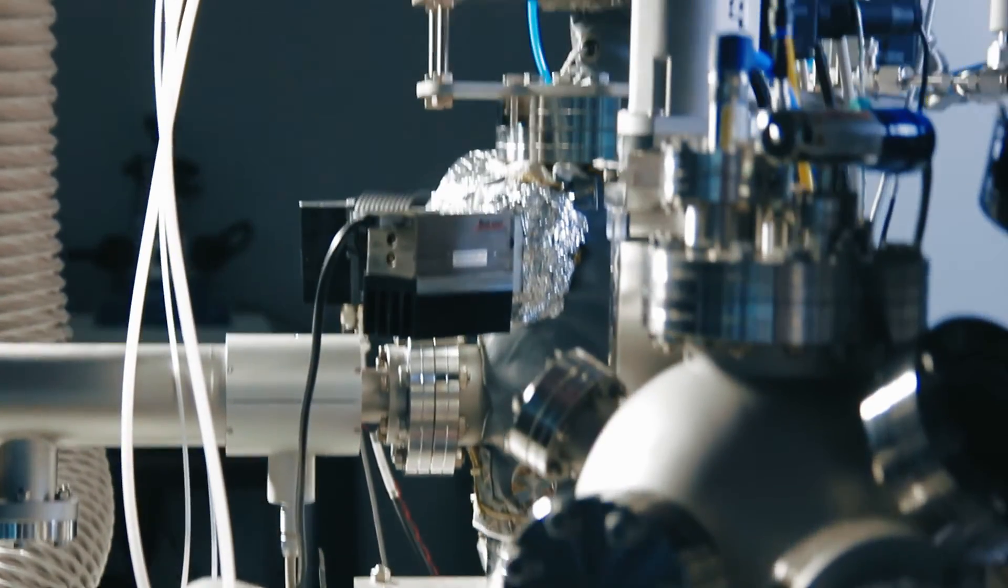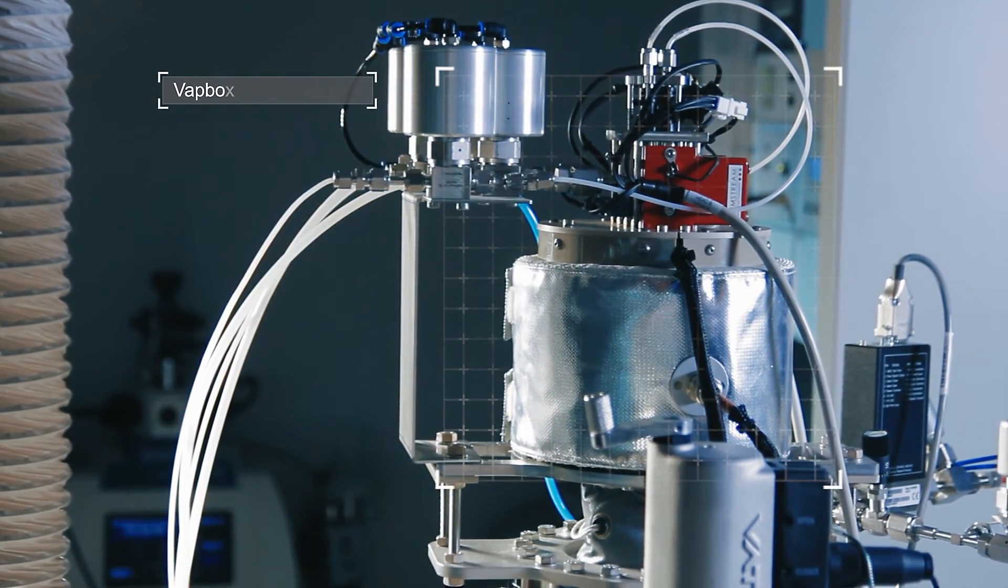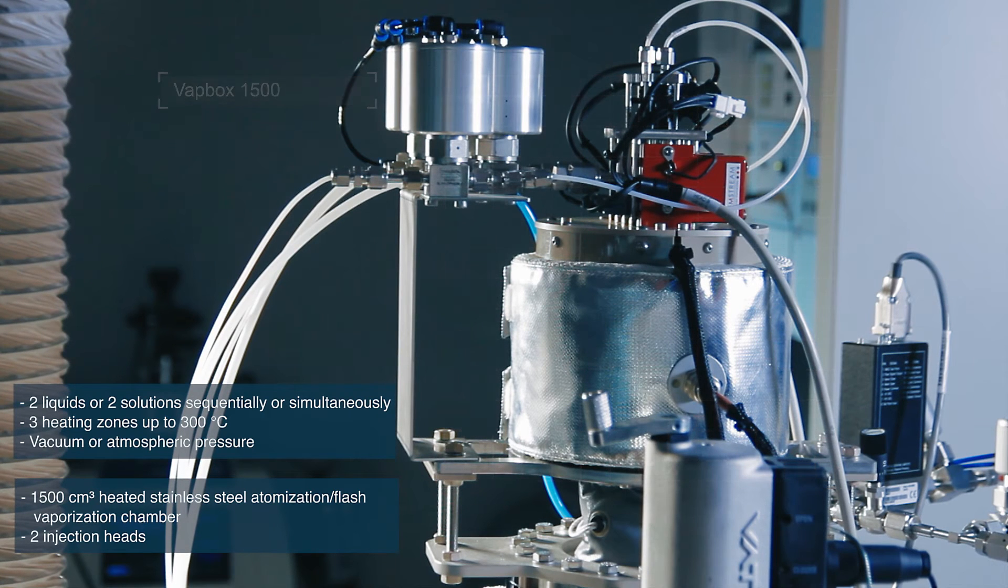The VAP Box 1500 is a versatile high-performance vaporizer, which can vaporize two liquids or two solutions sequentially or simultaneously at temperatures up to 300 degrees centigrade while under vacuum.